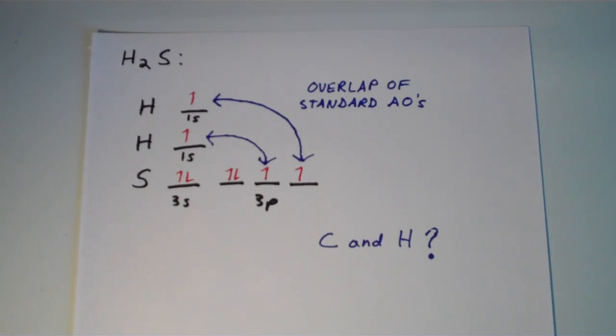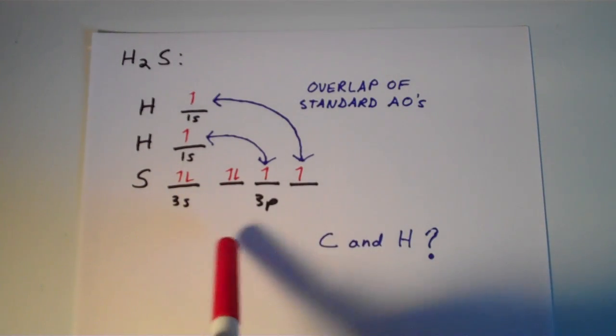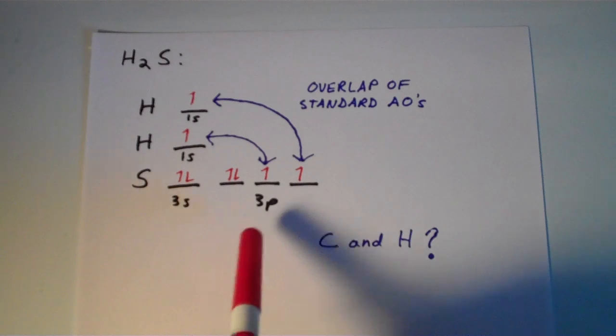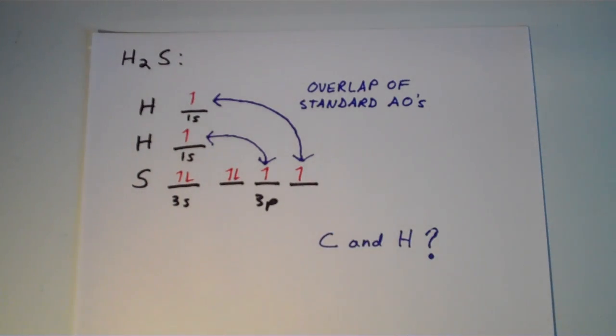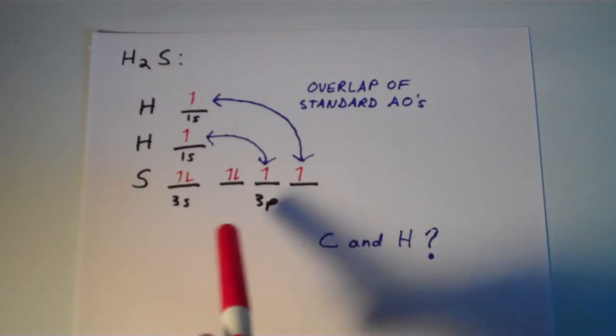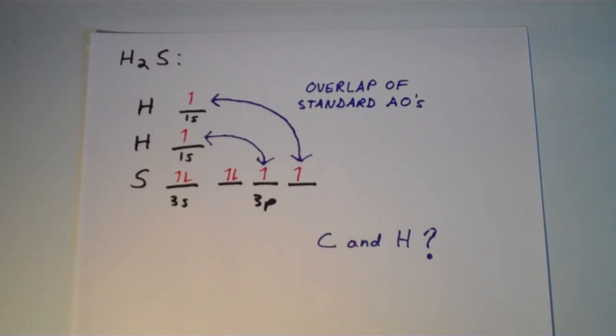So in the case of a molecule like hydrogen sulfide, H₂S, if we consider each sulfur hydrogen bond as an overlap of a hydrogen 1S orbital and a sulfur 3P orbital. By the way, I made a mistake in the last video. When I was demonstrating this, I labeled the sulfur valence atomic orbitals as 2S and 2P, and they are actually 3S and 3P. So that mistake didn't ruin the entire video, but nevertheless it was incorrect information, so I just wanted to rectify that.